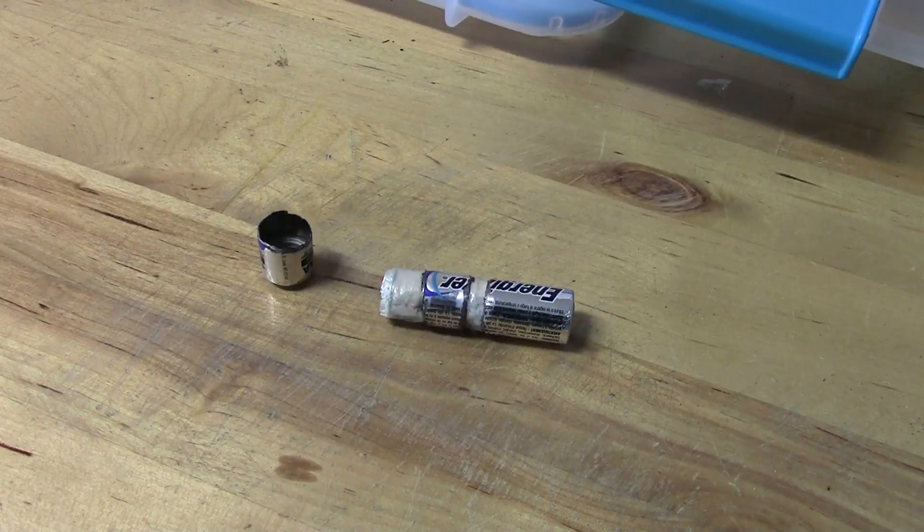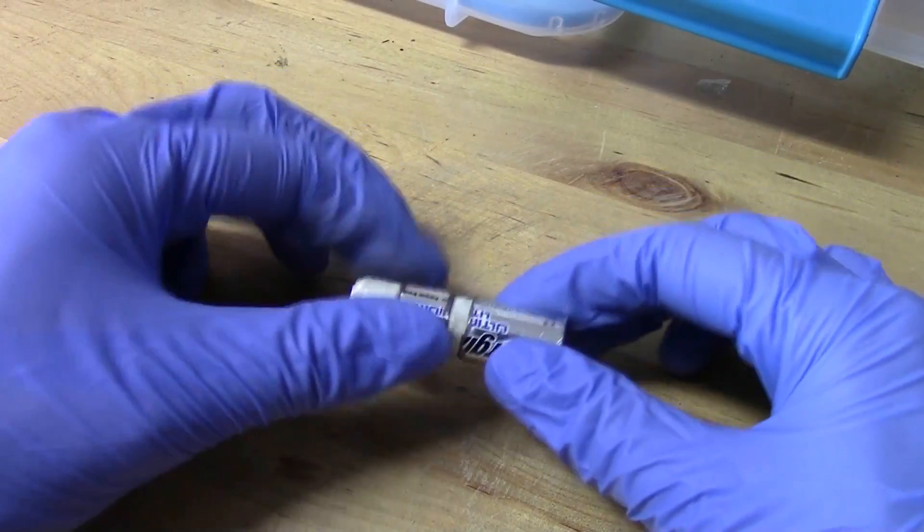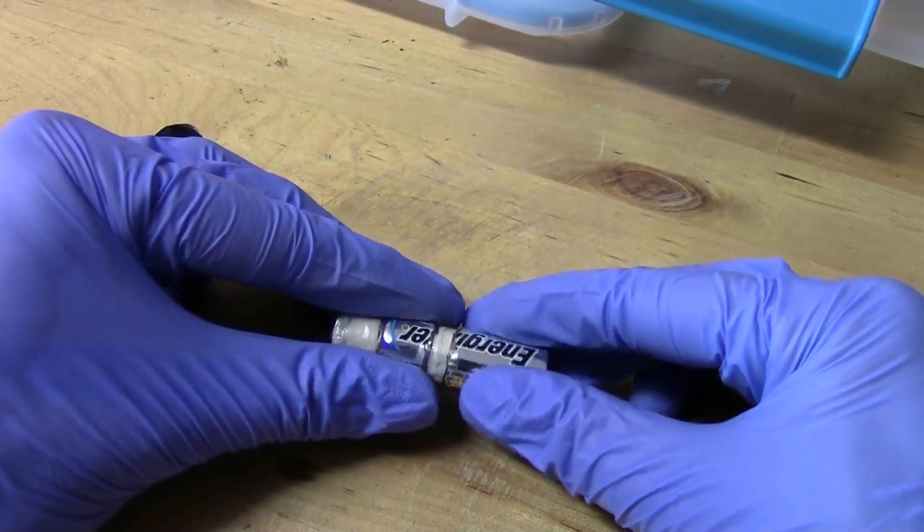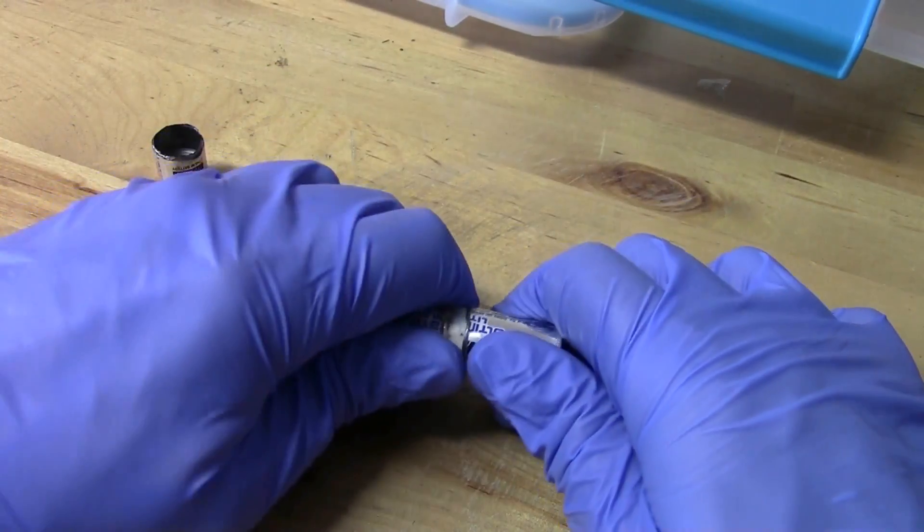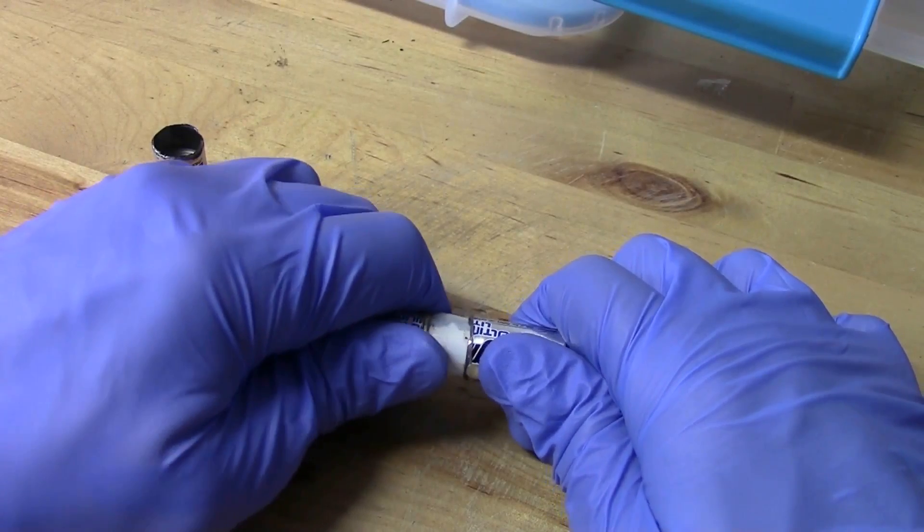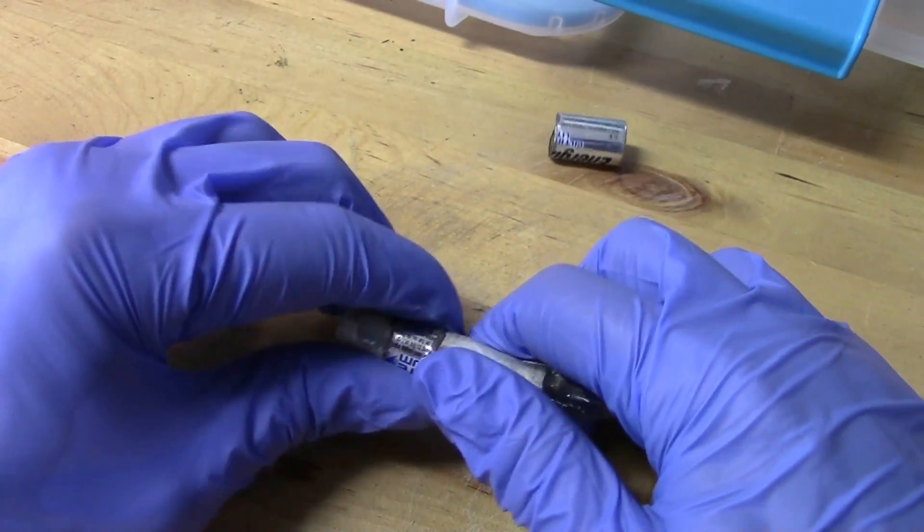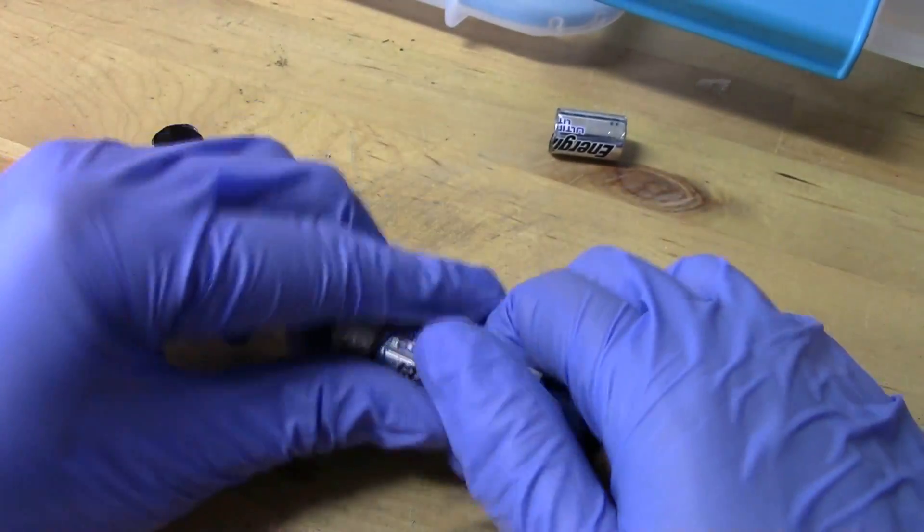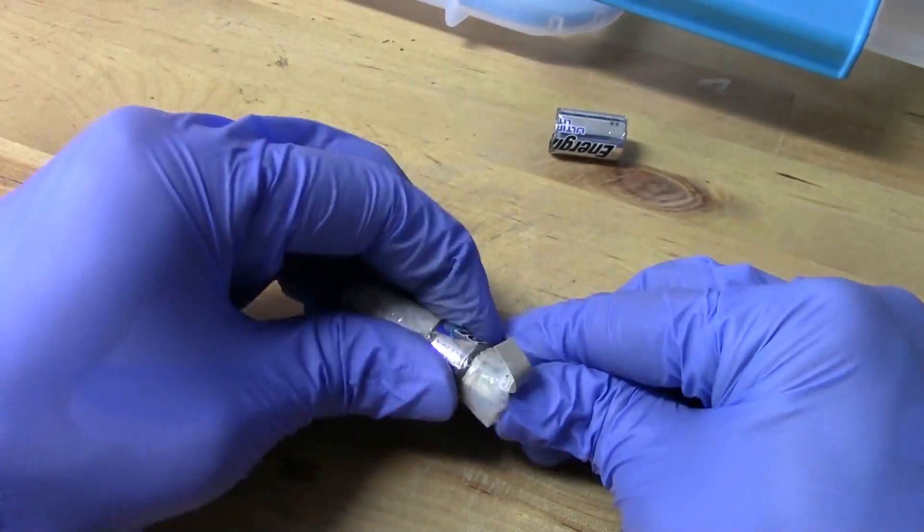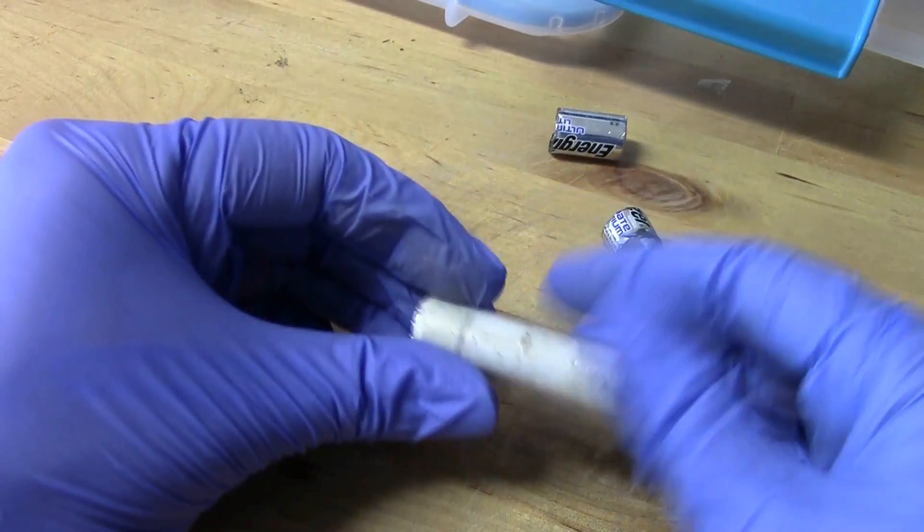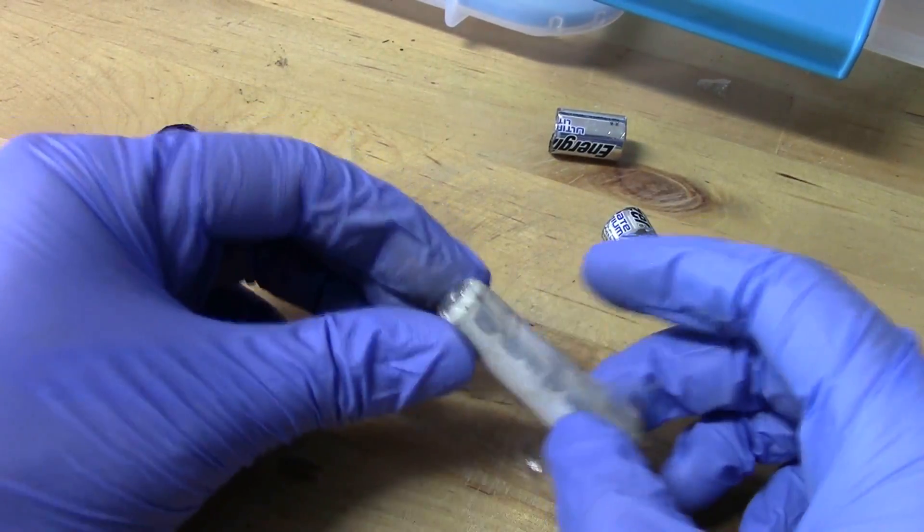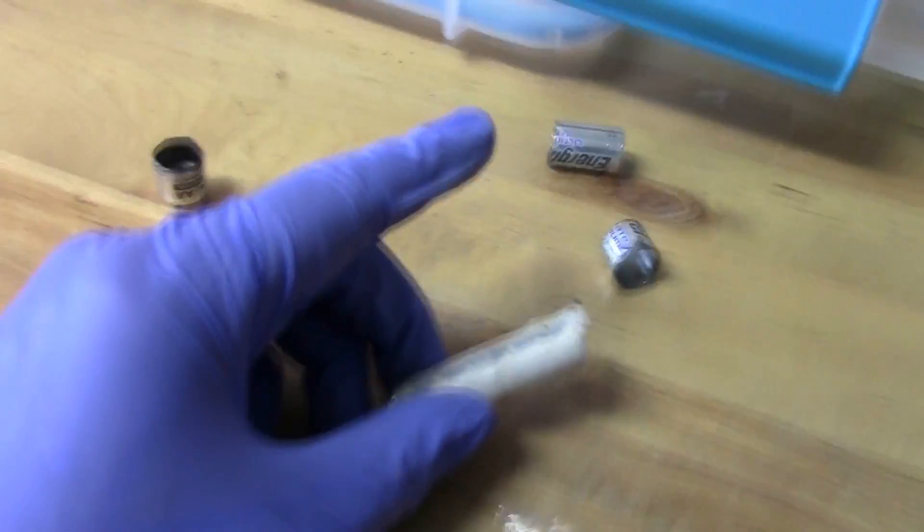So even after getting the cap off I still had some trouble getting the thing out so I did the same thing and cut another ring out and now it should come out pretty easily. Awesome. I'll just slide this ring off. Okay great great so this is the core of the battery and now this is going to go into my glove box here and we'll fill it up with argon and then take it apart in there.